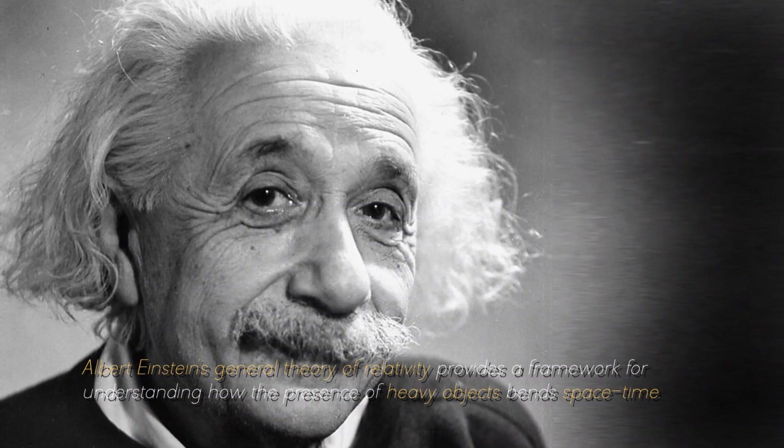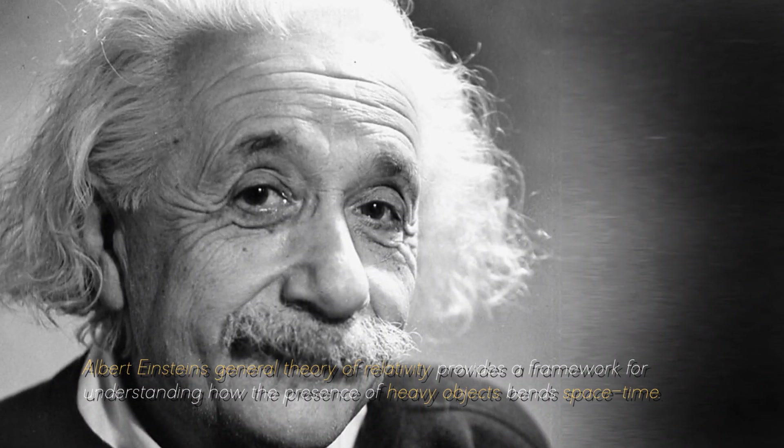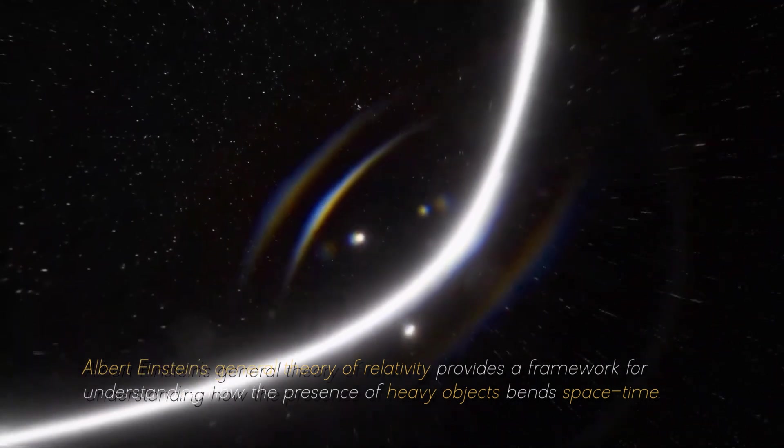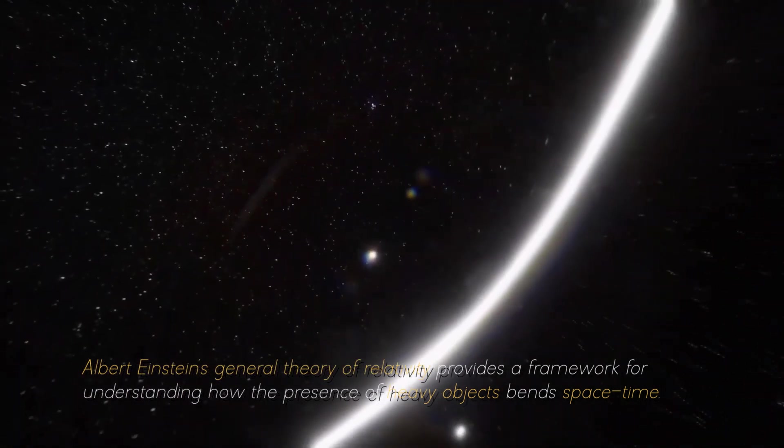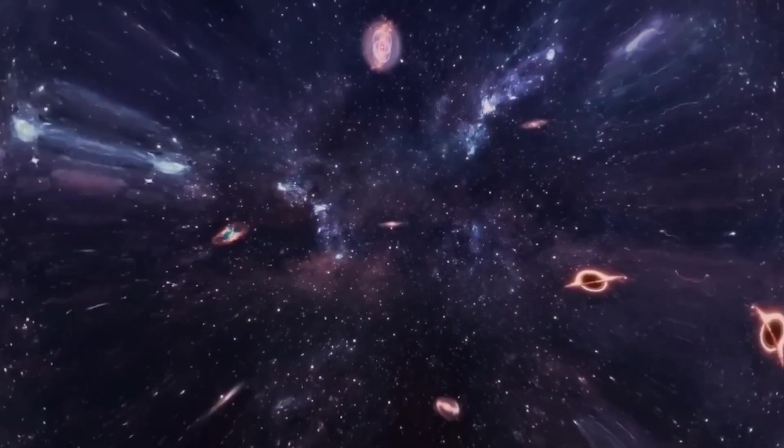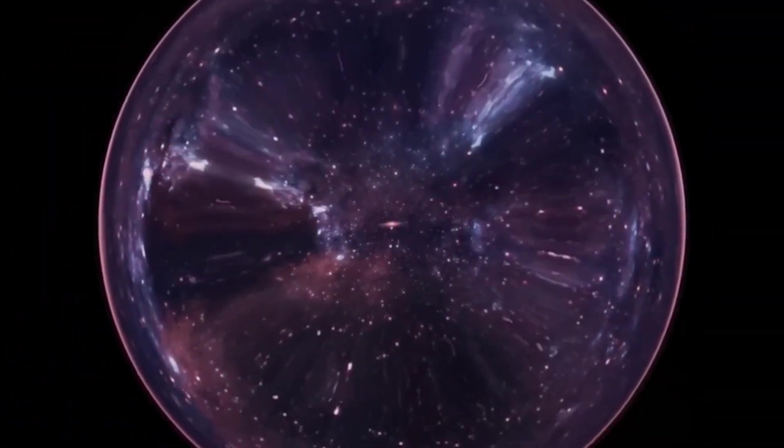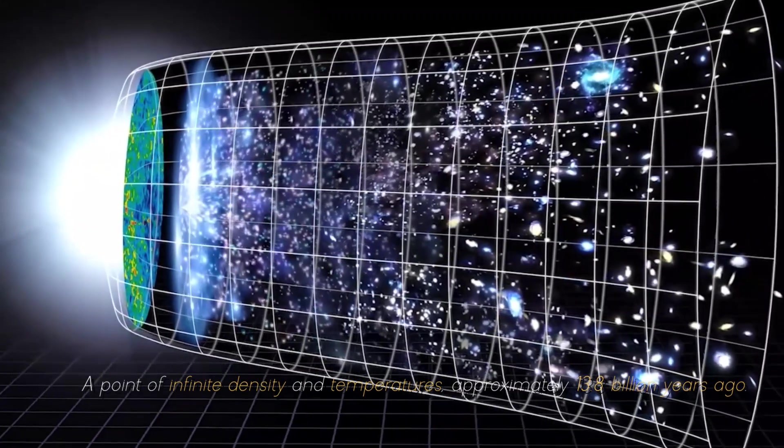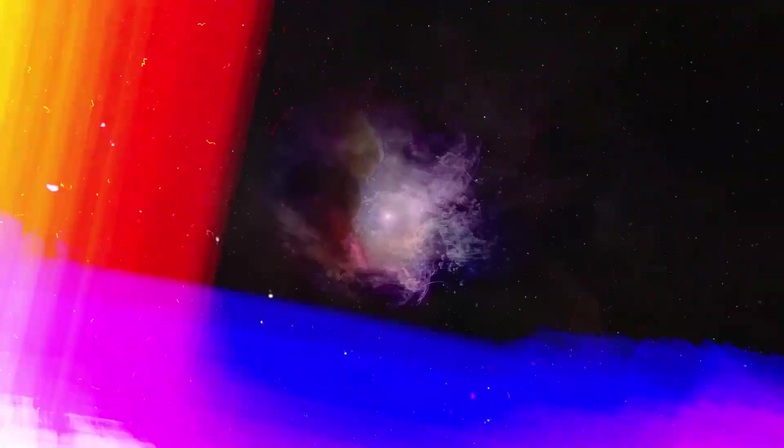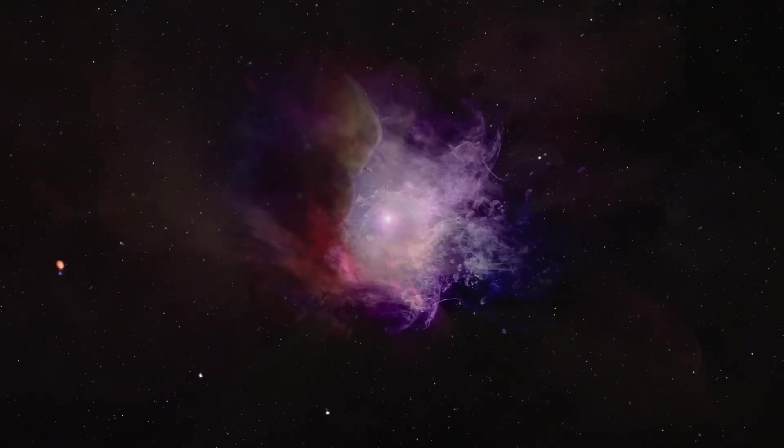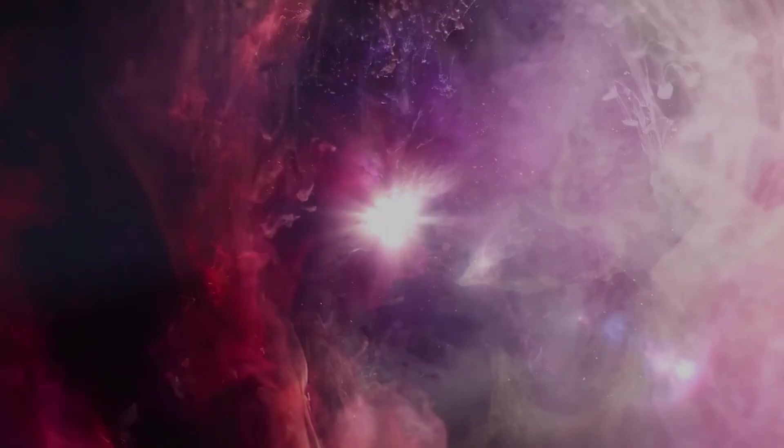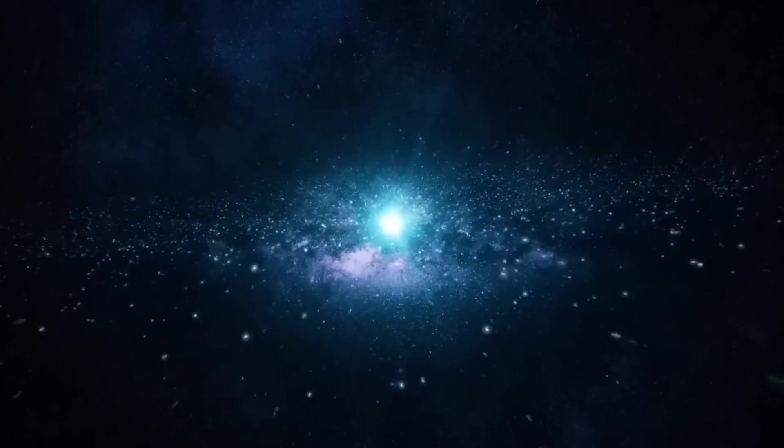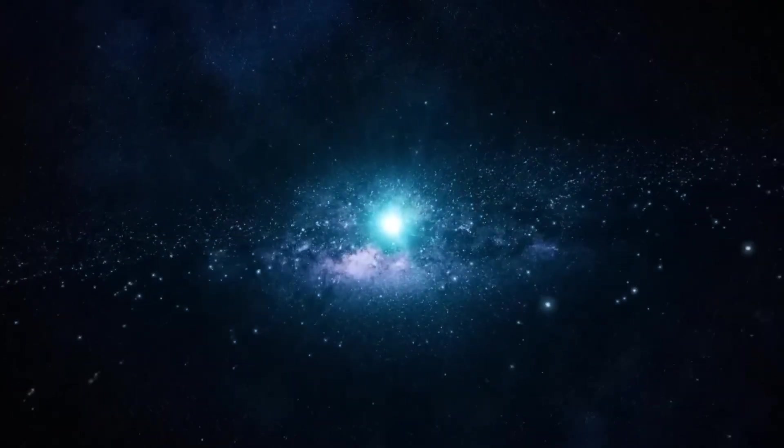Albert Einstein's general theory of relativity provides a framework for understanding how the presence of heavy objects bent space-time. According to this theory, the cosmos originated as a singularity, a point of infinite density and temperature approximately 13.8 billion years ago. According to the Big Bang theory, all matter and energy were compressed into an extremely small, hot region. At this point, the cosmos began to expand with a rapid and violent event known as the Big Bang.